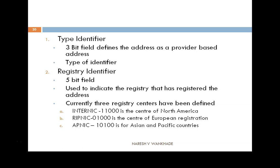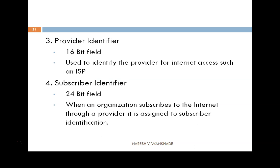Three registry centers have been defined. The first one is the InterNIC, which uses 11000, and is the center of North America. The second one is the RIPE NIC, using 01000, which is the center of European registration. The third one is the APNIC, which uses the next defined code, for Asia-Pacific registration.